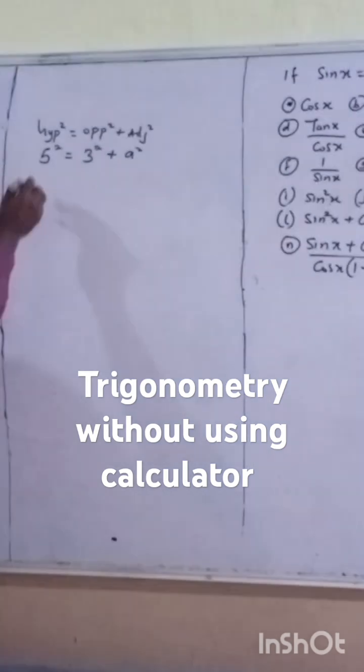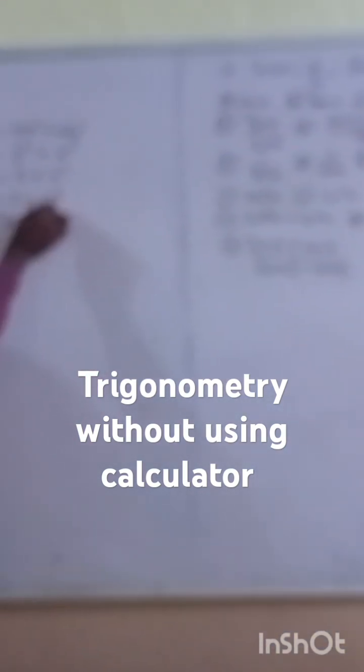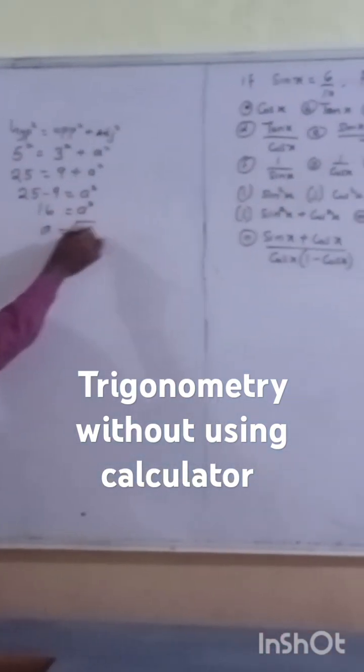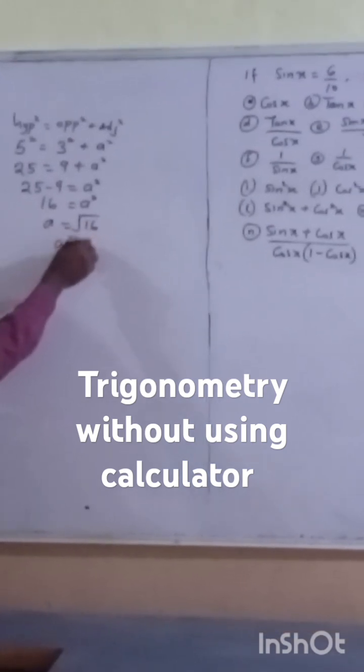25 equals 9 plus A squared. 16 equals A squared. Finding the square root of both sides, A equals the square root of 16, so A equals 4.